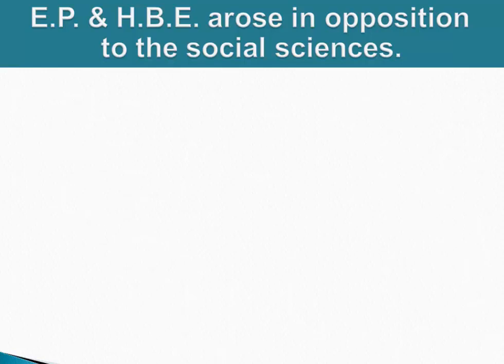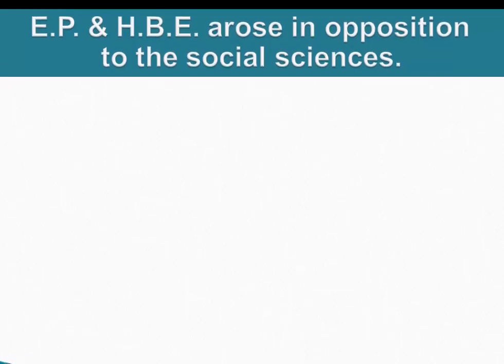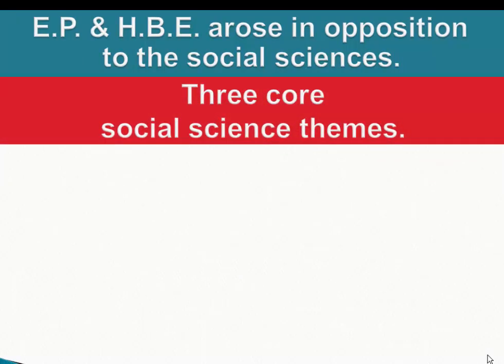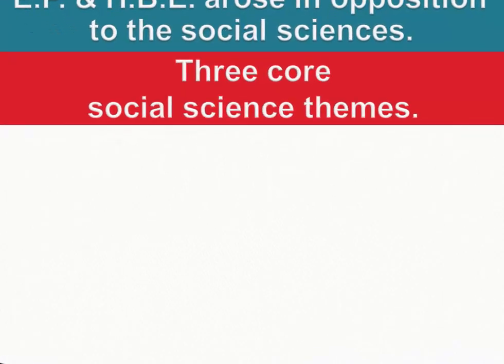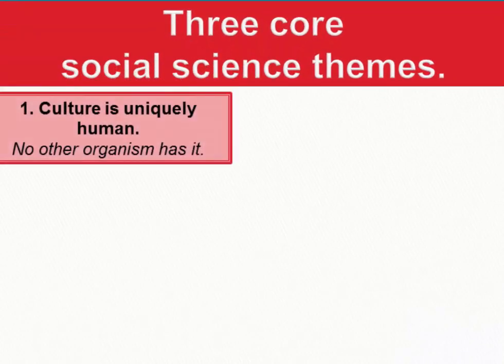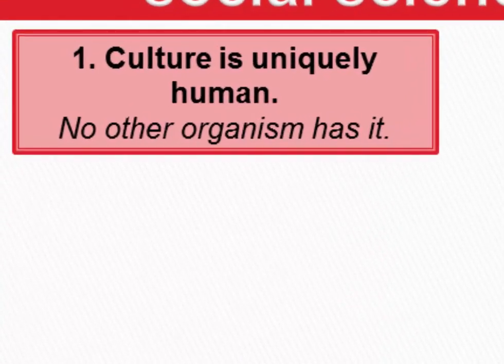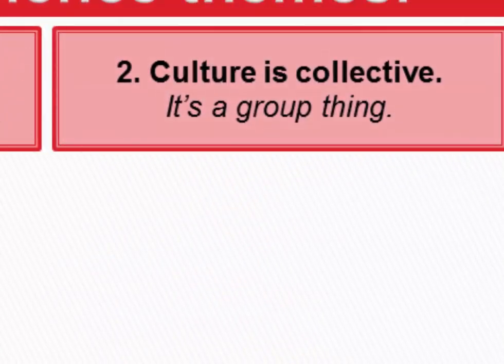As you'll recall, evolutionary psychology and human behavioral ecology developed in opposition to the social science approach, and we can define this in relation to three core social science themes. The first theme concerns the uniqueness of humans, and specifically the argument that culture makes humans unique and it's something that no other organism has. The second theme is the argument that culture is about groups — it's a collective phenomenon and it overrides the interests of individuals, so in understanding culture we can focus strictly on groups.